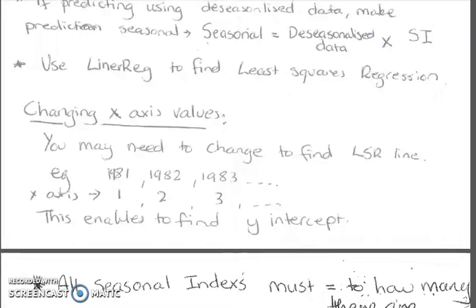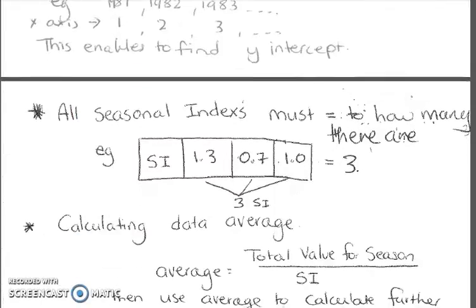Changing your x-values. You may need to change your x-values to find your linear regression line. For example, if you use 1981, 1982, 1983, you can change those to be one, two, and three. That allows you to find a y-intercept on your axis to work out a formula. Just make sure that when you are doing your predictions later on, if you calculate your x-value and it comes out to be three, you need to work out what three means. It means 1983. You often need to change your axis values. So instead of years, you can use values.